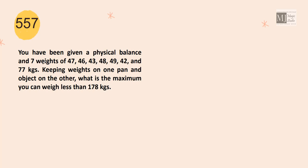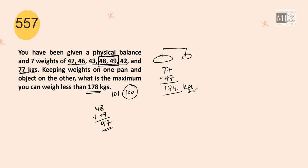You have been given a physical balance and 7 weights: 47, 46, 43, 48, 49, 42 and 77 kgs. Keeping weights on one pan and object on the other, what is the maximum you can weigh? Less than 178. So if I take 77, I am left with 101. But it should be less than 178. That means, my maximum can go to 100 with these 6. 48 and 49 are the biggest of this lot of 6. So 48 plus 49 will give me 97. 77 plus 97 would be 174 kgs. 174 kgs would be the maximum which we can weigh using these weights.